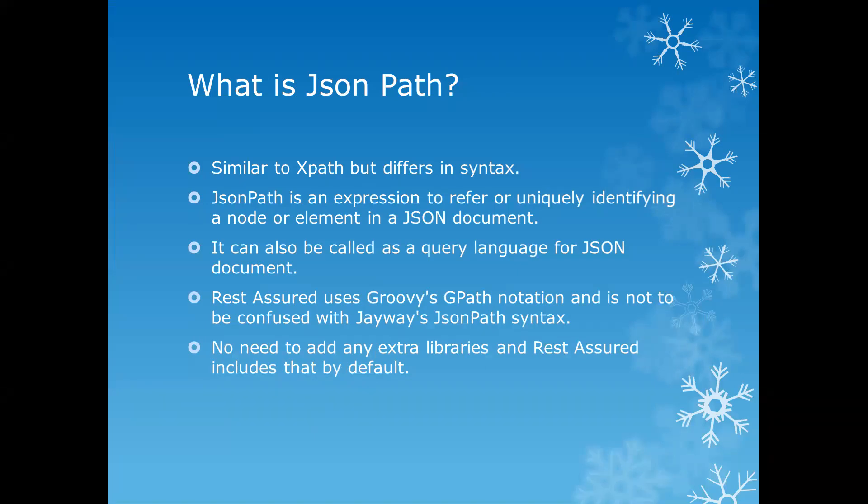This is a very important thing. Whenever you are stuck somewhere and Googling to write some JSON path, you might get a JSON path which is supported by JWay, which is another JSON path library. If you try to apply the same concept for the REST Assured JSON path, it will not work, because REST Assured supports Groovy's GPath, not the JWay JSON path.